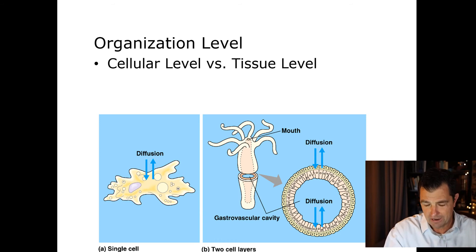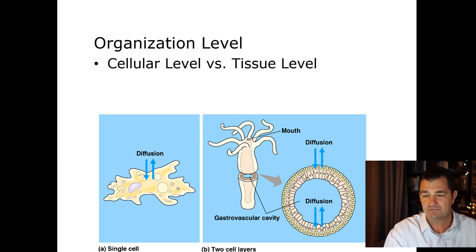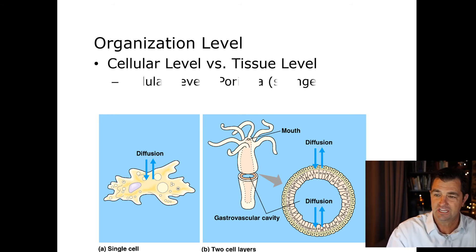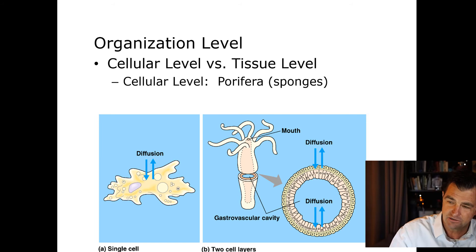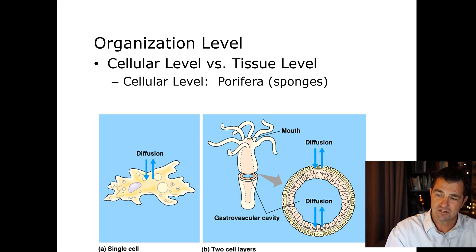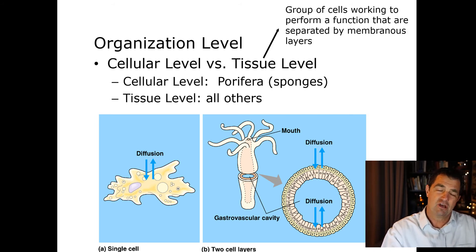Most animals have a tissue level of organization, but some have a cellular level of organization — organized into individual cells. That will be the first group we talk about: the sponges. All other groups will have a tissue level of organization.